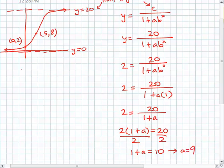Once I have that, I can rewrite the equation with the c value and a value plugged in. Then I can plug in the second point to figure out b. When y=8, x=5. I can again solve by cross multiplying.